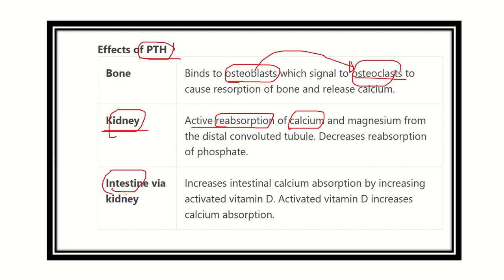The third pathway is through the intestine, but this is the indirect action of parathyroid hormone. PTH acts on the proximal convoluted tubule, and from there a signaling pathway is activated. This signaling pathway acts on the intestine, increasing absorption of calcium from the intestine and raising blood calcium level.